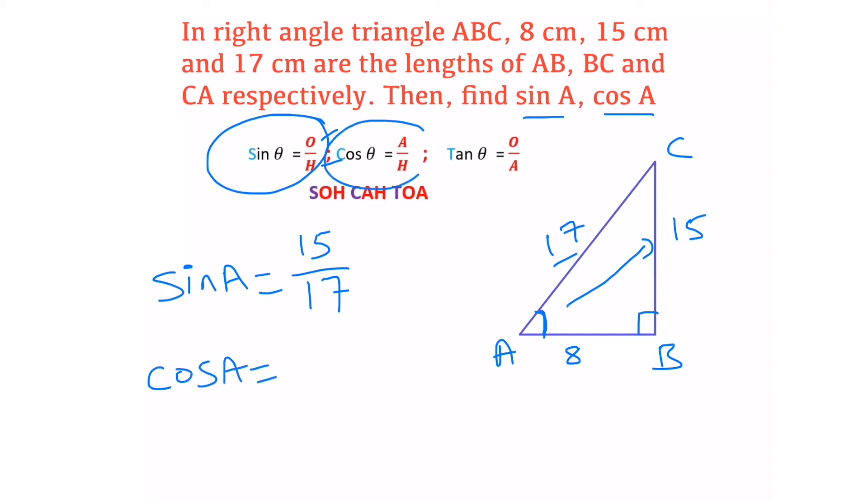The formula for cos theta is adjacent side by hypotenuse. The adjacent side to angle A is AB which is 8, divided by hypotenuse 17. So cos A = 8/17.